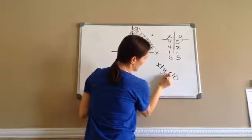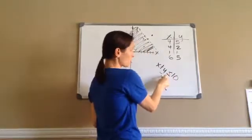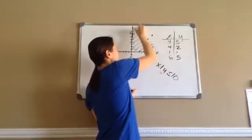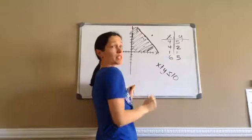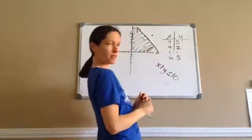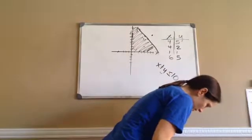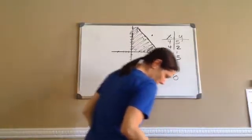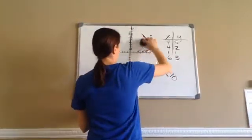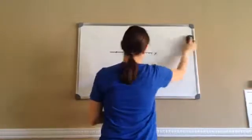Now, if it says less than and equal to, that means it could be less than 10, but it also could be equal to 10. Guess what happens to this dotted line? It fills in solid because it could equal it, which means it's solid. Let's try a few of these. Listen to this problem. Because these are the kind of problems you're going to get.